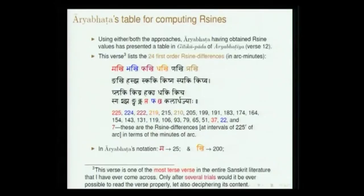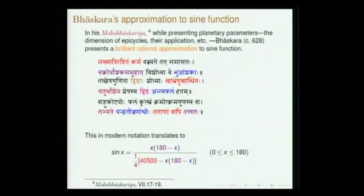The idea is: if you want a certain sine value, you look at the table, choose that particular value, find out the difference, and use first or second order interpolation to get the actual sine value. Bhaskara says 'makhyadi rahitam karma' — you can completely avoid the table. He is presenting a certain other procedure that does not require the sine table at all, but rather an approximate formula. This is not necessarily Bhaskara's own invention.